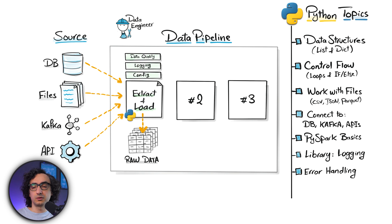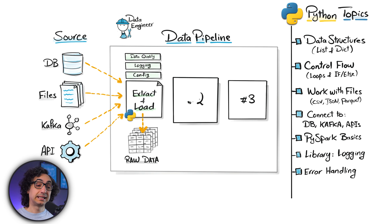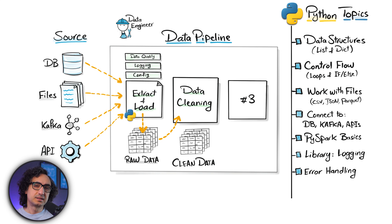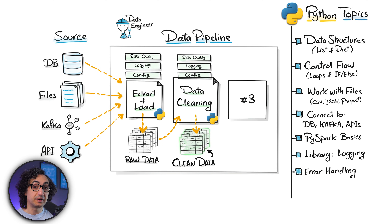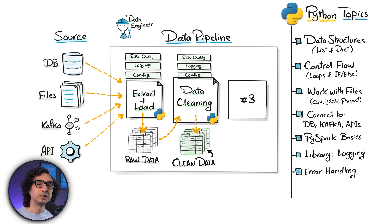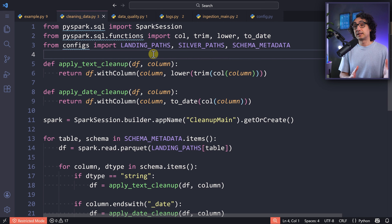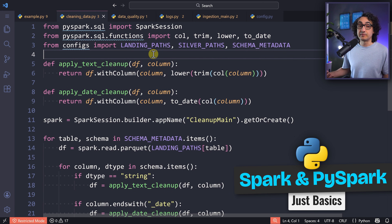The next step is all about cleaning and enhancing data. We take the raw copy of the data and start fixing it: handling missing values, removing duplicates, and doing small enhancements. We do this by writing a Python main script with the same add-ons — config file, logging, data quality, and so on.